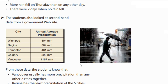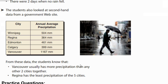The students also looked at second-hand data from a government website. Here we have some western Canadian cities and their annual average precipitation in millimeters. From these data, the students know that Vancouver usually has more precipitation than any other two cities combined. Vancouver has 1167 millimeters — if you add any two of the others together you still won't reach that, so Vancouver is very rainy compared to other places.